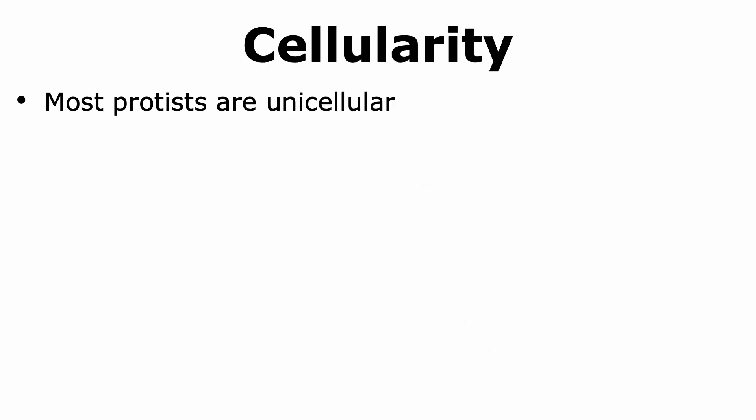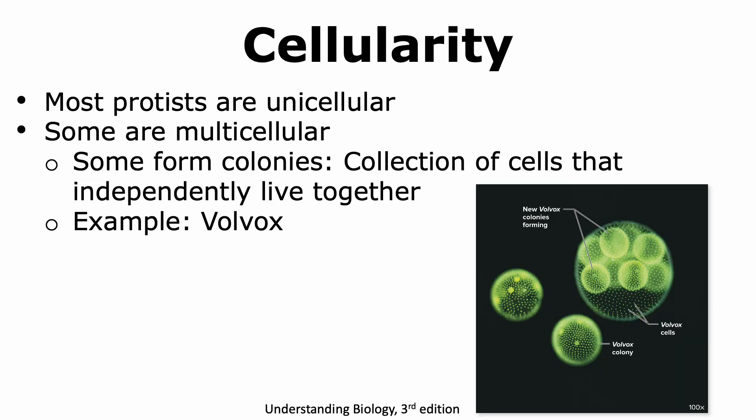Most protists are unicellular organisms. However, there are some that are multicellular as well. In some instances, we can see individual organisms come together to form a colony — a collection of cells where, even though they are in close proximity to one another, they independently live from one another. An example of such a colony is Volvox, where we are able to see the Volvox cells present in a Volvox colony.